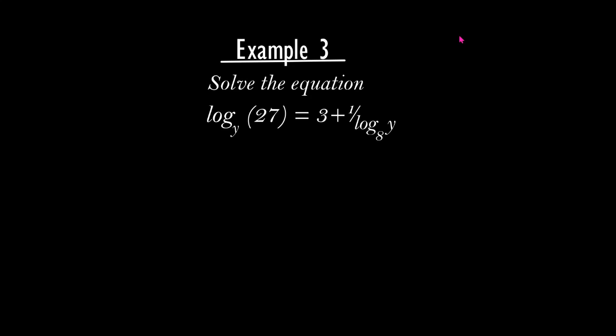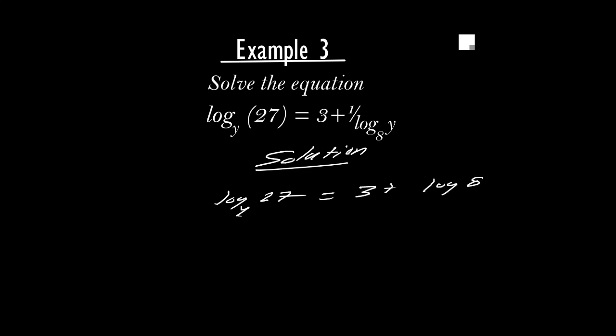Example number two on logarithmic equations: solve log 27 to base y equals 3 plus 1 over log y to base 8. We have log 27 to base y equals 3 plus log 8 to base y. From the rules of logarithms, log 8 to base y is the same as 1 over log y to base 8, so we get rid of the logarithm in the denominator.